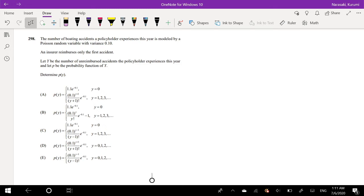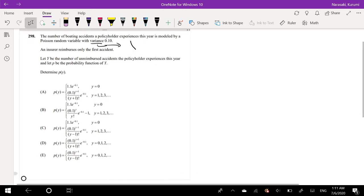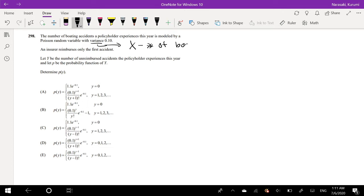The number of boating accidents a policyholder experienced this year is modeled by a Poisson random variable with variance 0.1. We also know that the variance of a Poisson distribution is just the mean, so I'm going to call x the number of boating accidents, and this has a distribution equal to a Poisson distribution with a mean equal to 0.1.